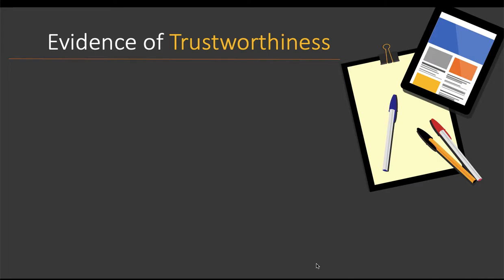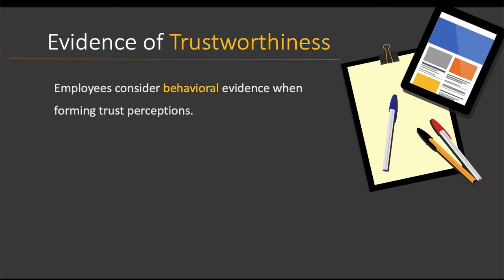Welcome to this mini lecture on justice. At this part in the course module, you should have just learned about the different types of trust and how these different types of trust influence whether or not we will trust an authority figure at different points in time. Now that we know there are different types of trust, we are going to dig into what makes somebody display trustworthiness. When employees are looking at an authority figure like a manager, a supervisor, or a CEO, they watch what that authority figure does and how they behave in order to form trust perceptions. This idea that we are looking for behavioral evidence is called justice.